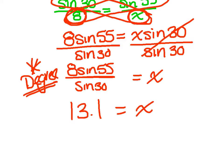And I get x equals 13.1 to the nearest tenth. And there you have it. You did trig that wasn't on a right triangle, using the law of sines. Let's try another one.